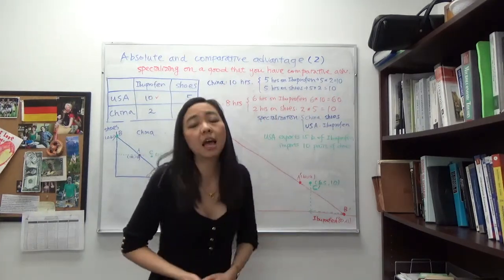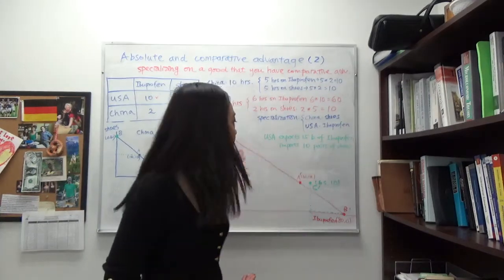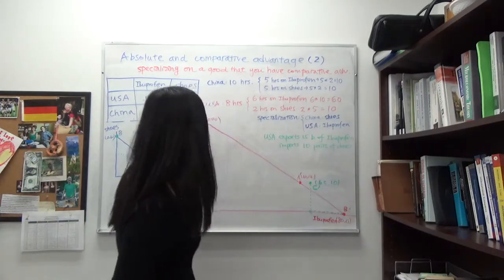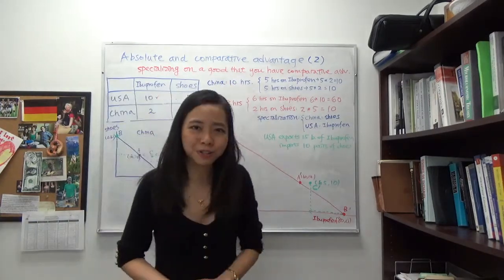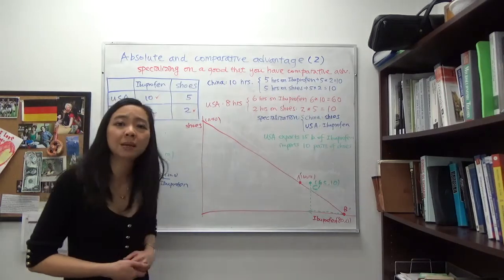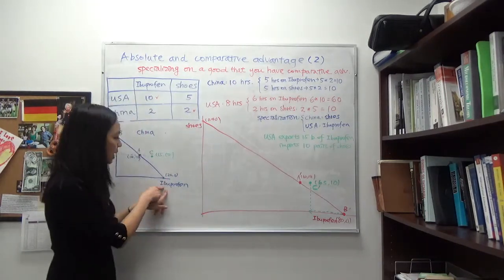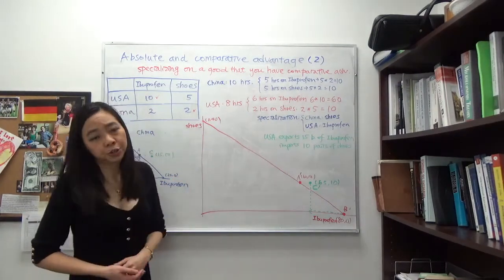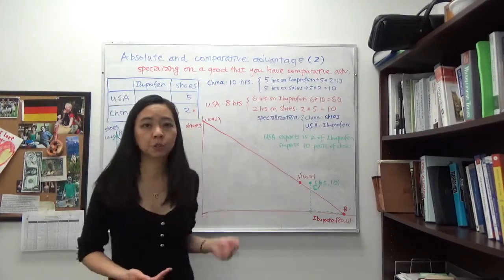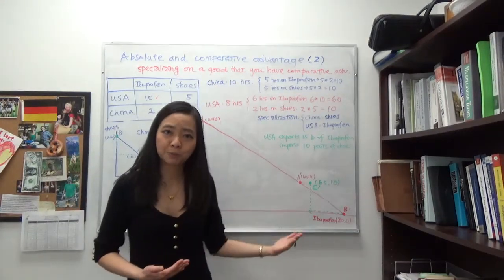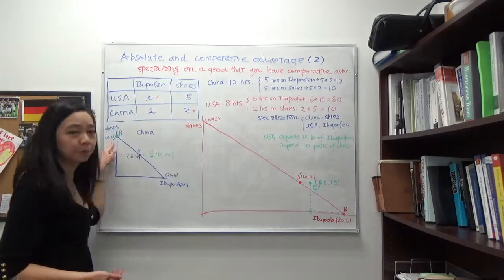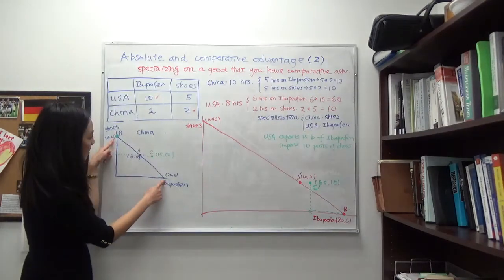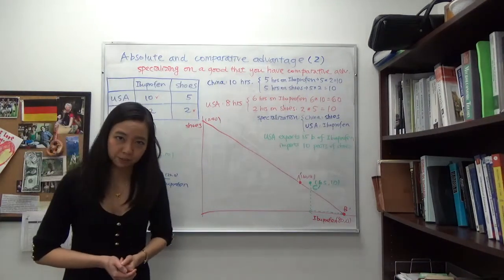The production possibility curve shows how much goods and services a country can produce with all its resources. If China uses all ten labor hours to produce ibuprofen, it produces 20 bottles of ibuprofen and no shoes. Alternatively, if China uses all ten hours on shoes, it produces 20 pairs of shoes and no ibuprofen. Connecting those two points gives China's production possibility curve.